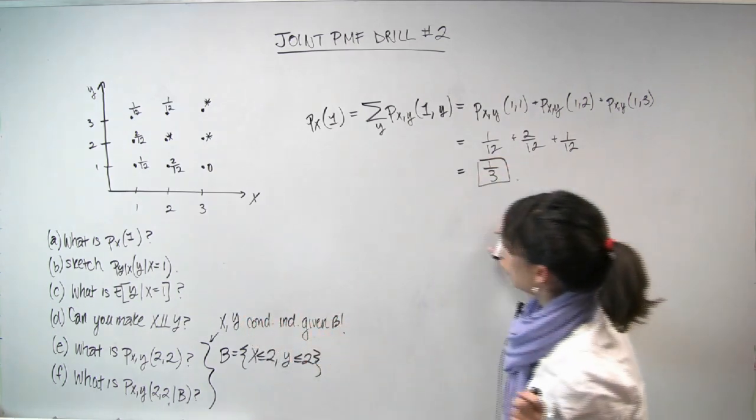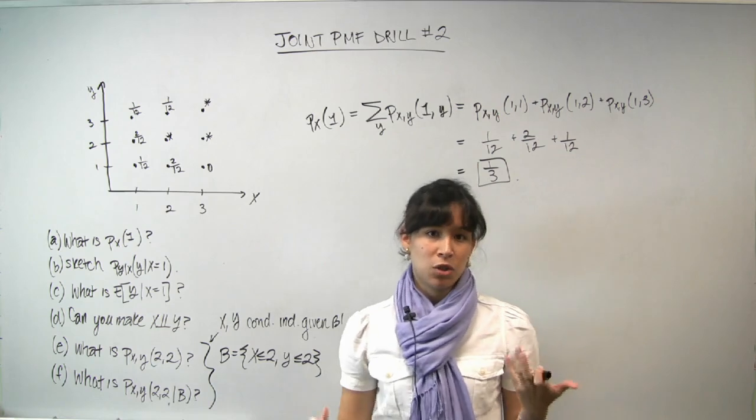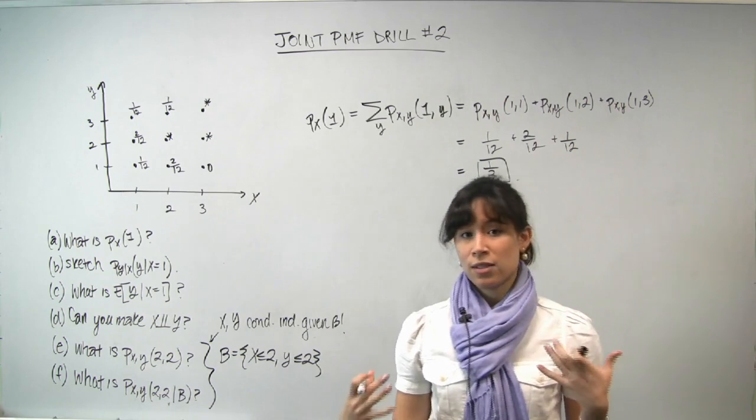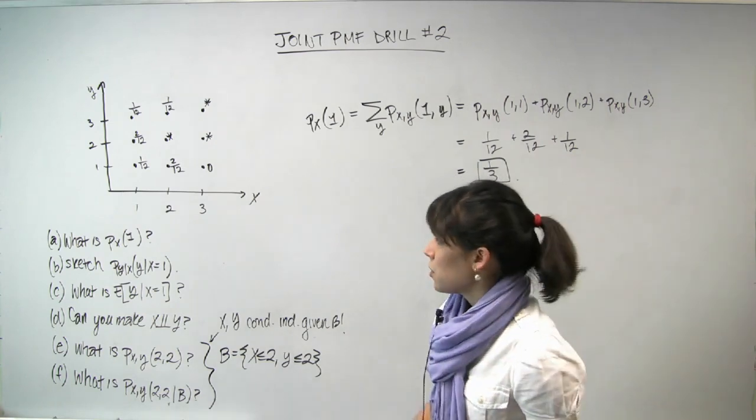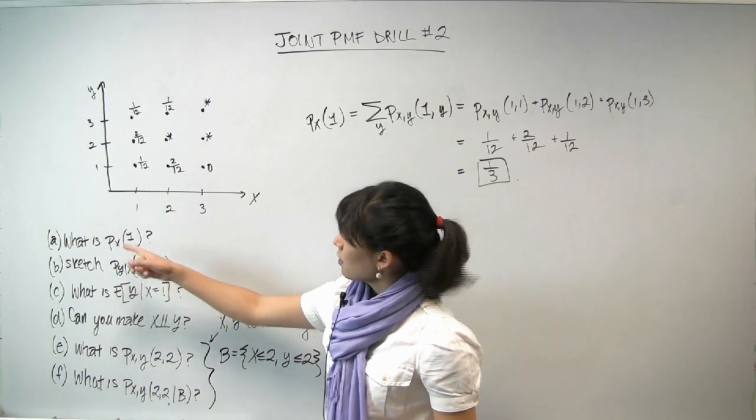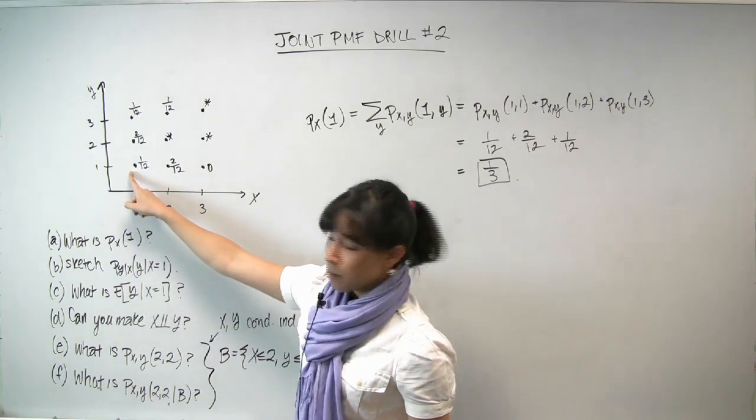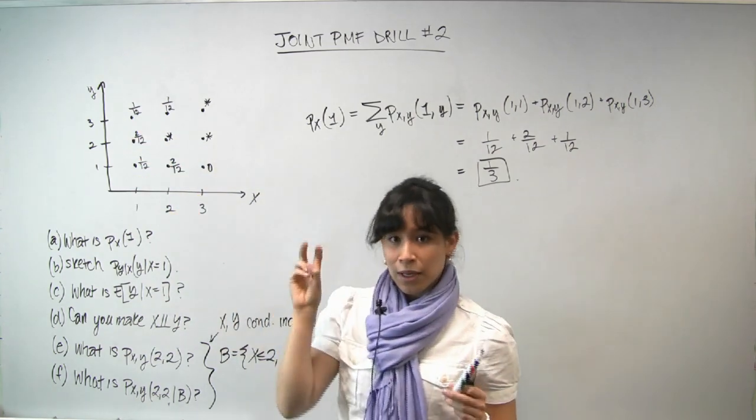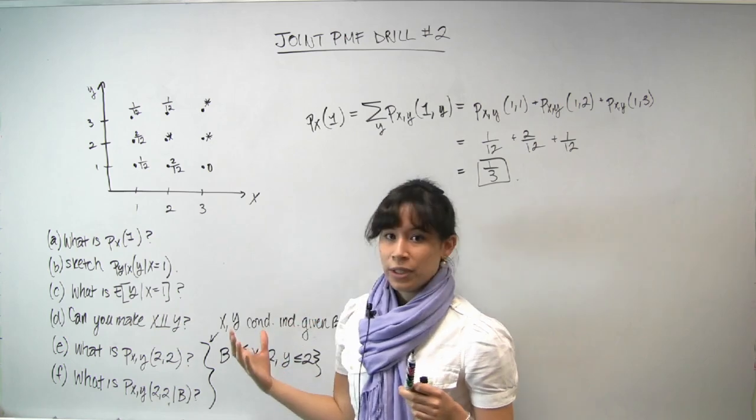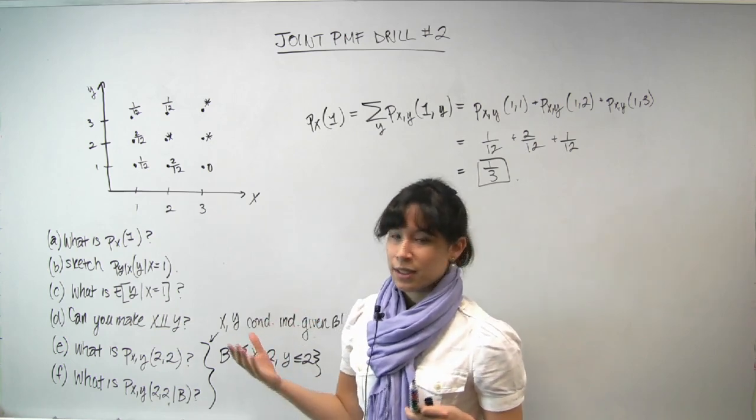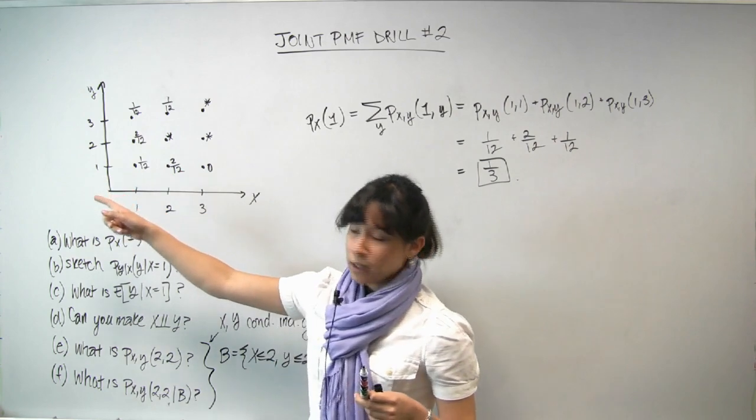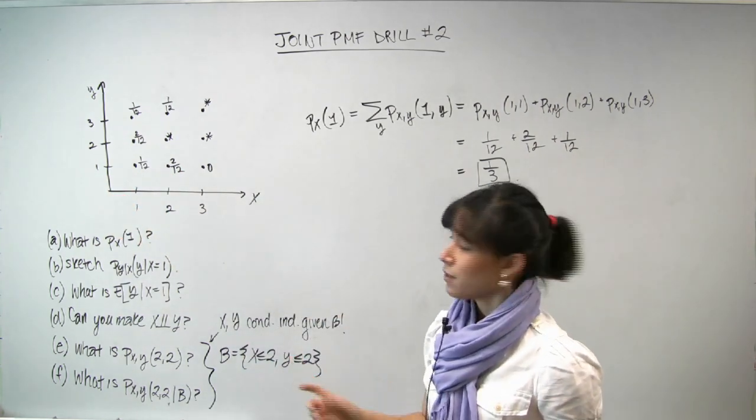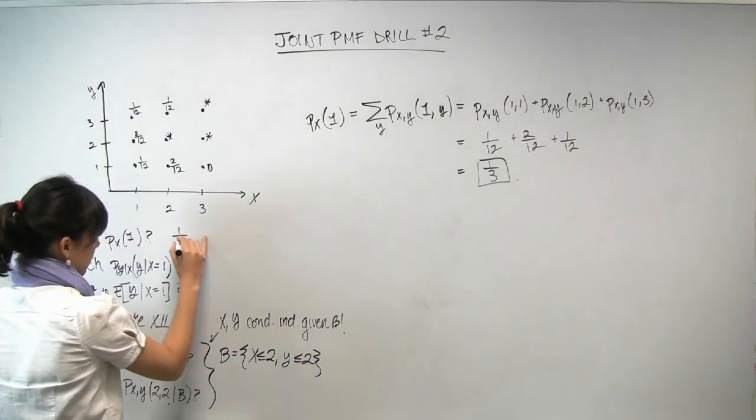So now you guys know the formula. Hopefully you'll remember the term marginalization. But I want to point out that intuitively you can come up with the answer much faster. So the probability that X is equal to 1 is the probability that this dot happens or this dot happens or this dot happens. Now these dots or outcomes are disjoint so you can just sum the probability to get the probability of one of these things happening. So it's the same computation and you'll probably get there a little bit faster. So we're done with A already which is great.